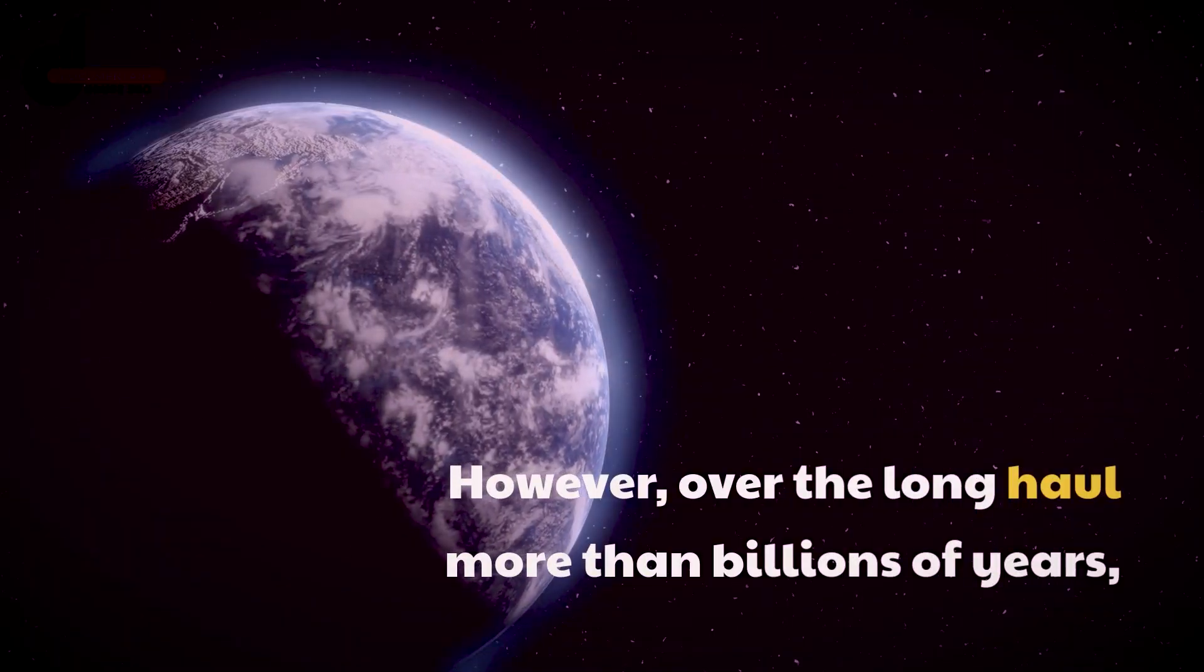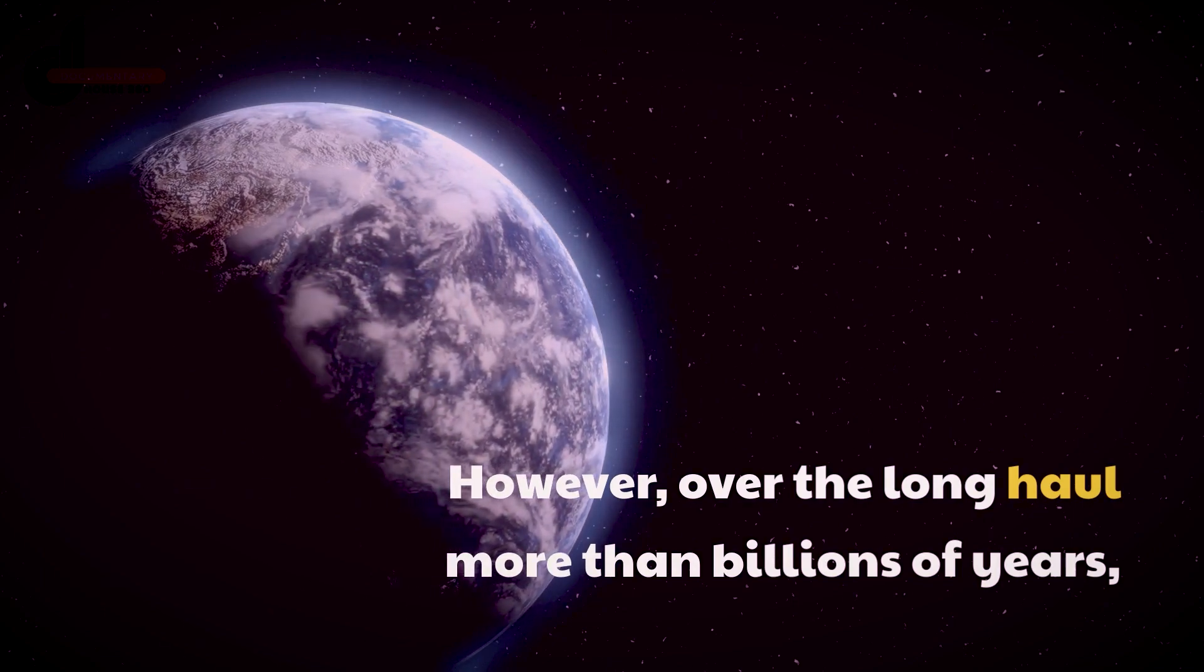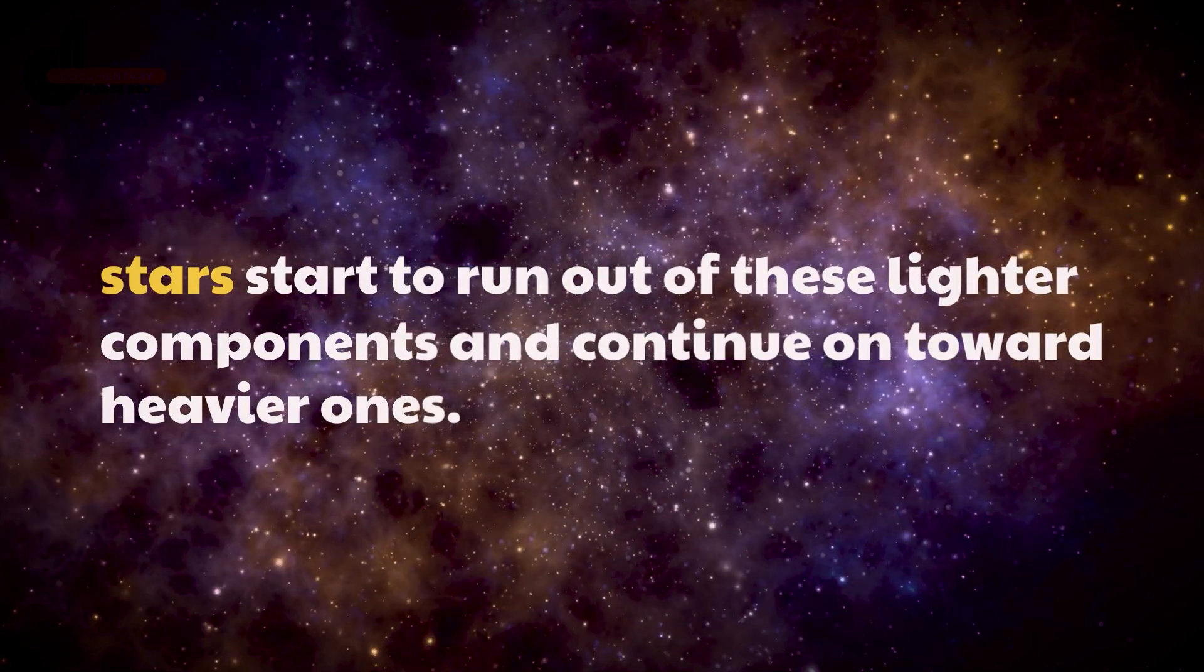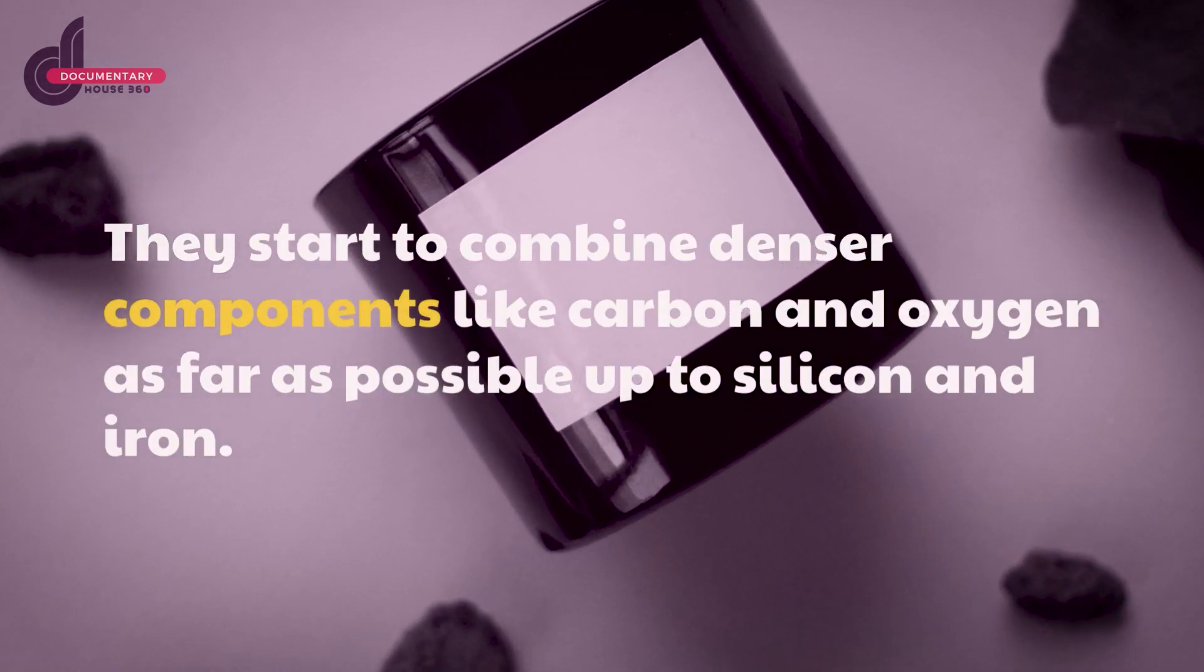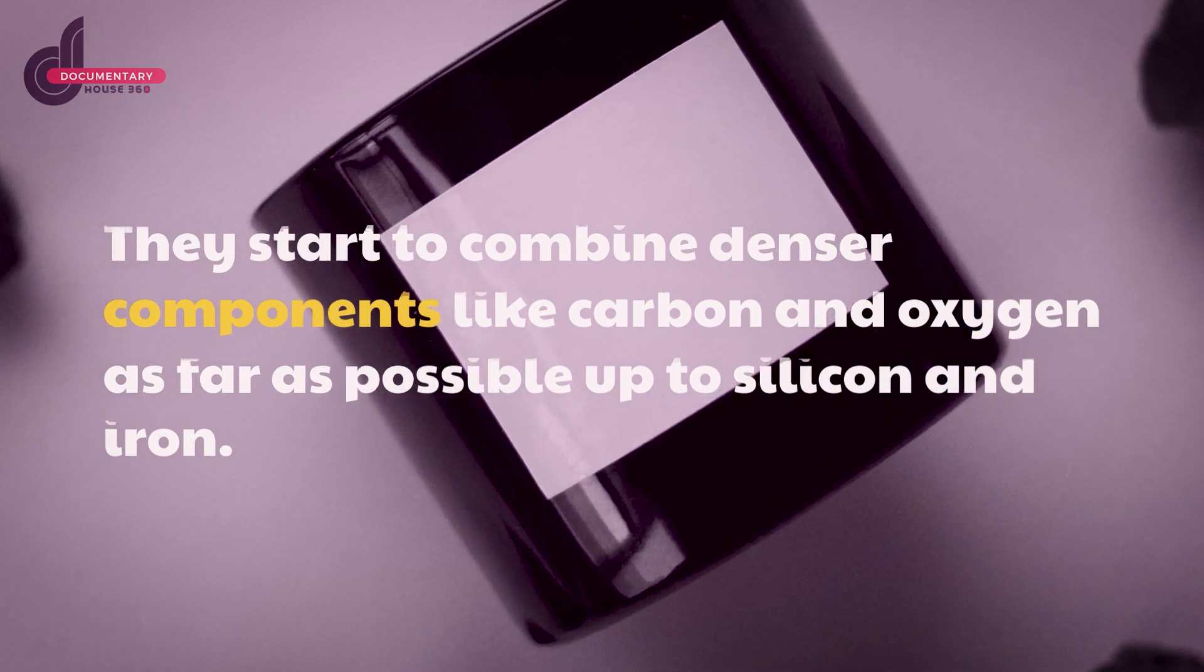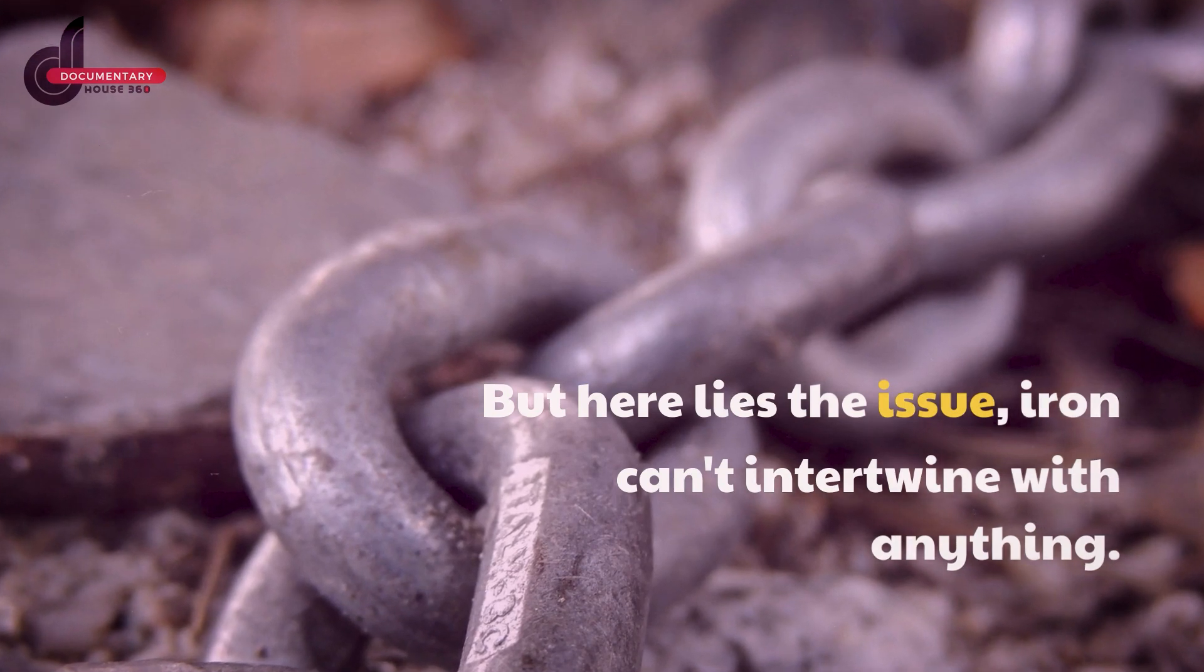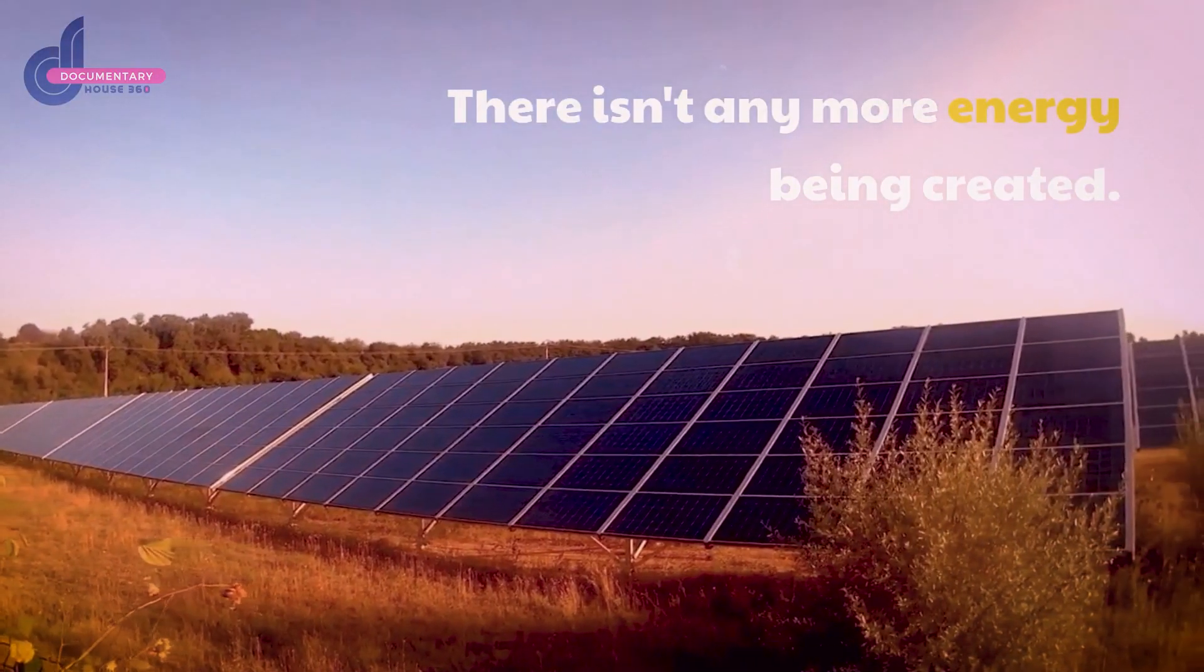This fusion of elements makes energy and pressure that pushes outward away from the sun, while gravity keeps the star kept intact. However, over the long haul, more than billions of years, stars begin to run out of these lighter elements and continue on toward heavier ones. They begin to fuse denser elements like carbon and oxygen, all the way up to silicon and iron. But here lies the issue: iron can't fuse with anything. There isn't any more energy being produced.